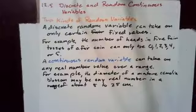A continuous random variable can take on any real number value over a range. For example, the diameter of a mature camellia blossom may be any real number in a range of about 5 to 25 centimeters.